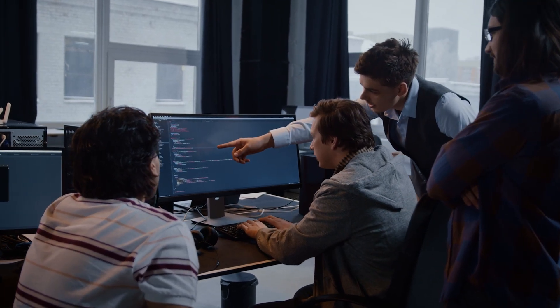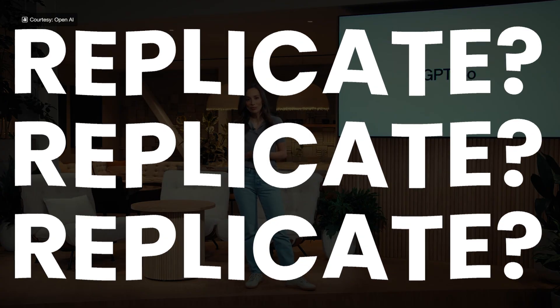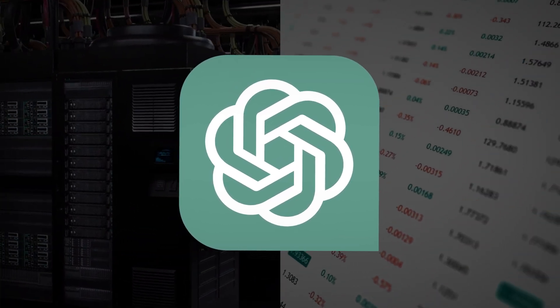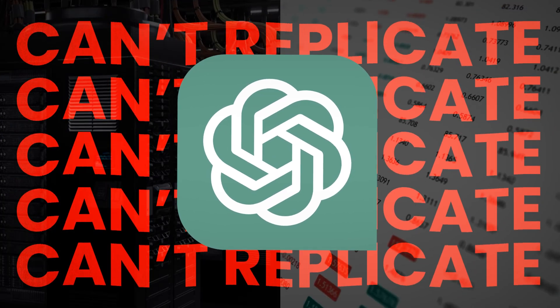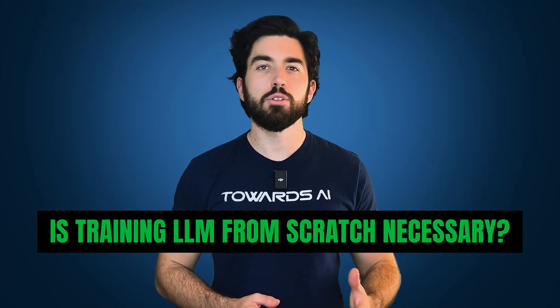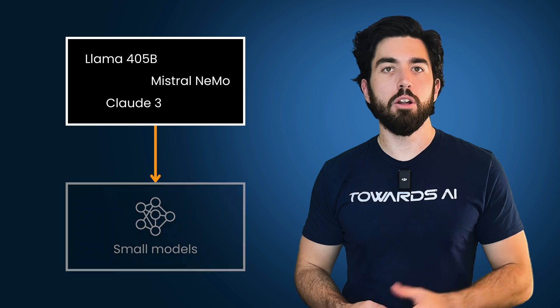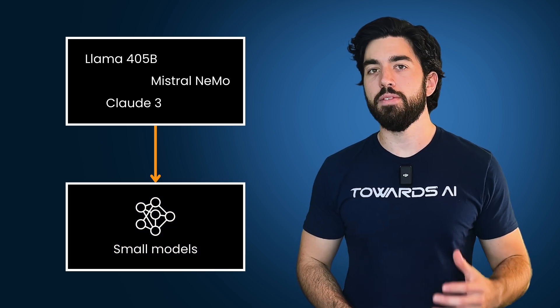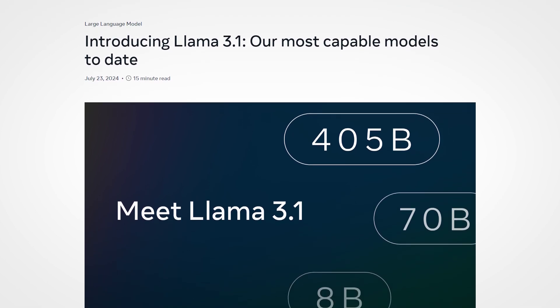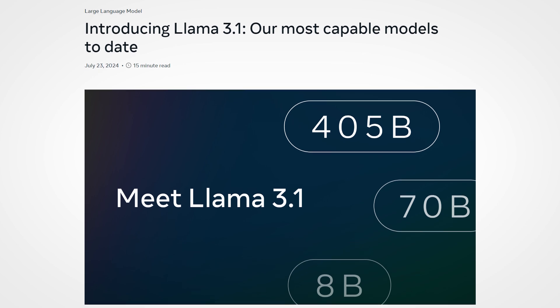We'd all love to build a model from scratch like GPT-4, but how realistic is that? The computing architecture and training data they have access to are so vast that most of us wouldn't be able to replicate it. But is it really necessary to train such large models from scratch? What if the big companies created one big model and we, the normal people, could use it to train smaller models for our specific tasks? That's exactly Meta's goal with the release of the 405B LLAMA model, leveraging distillation to train the smaller ones.